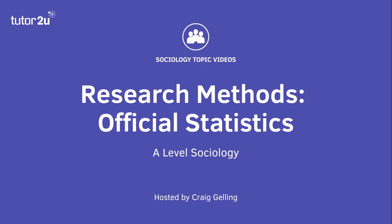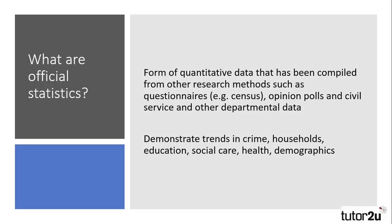Welcome to this Tutor2U Sociology topic video on research methods, looking at official statistics. Official statistics are a form of quantitative data that has been compiled from other research methods such as questionnaires like the census, opinion polls and civil service and other departmental data, for example the number of births, deaths and marriages, migration statistics, exam results and so on.